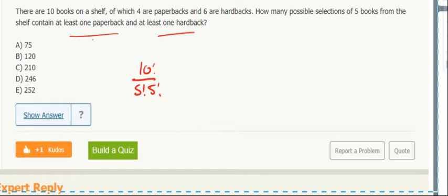This one says at least one paperback and at least one hardback, so you do total minus all paperbacks or all hardbacks, because each of those respectively is the opposite of what they want for that situation.